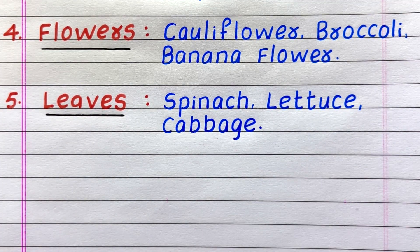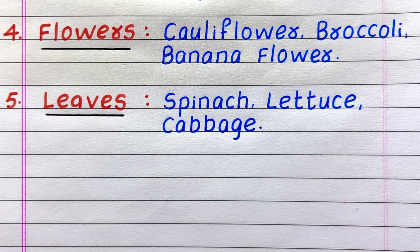Fourth edible part of a plant is Flowers. Example: Cauliflower, Broccoli, Banana Flower.